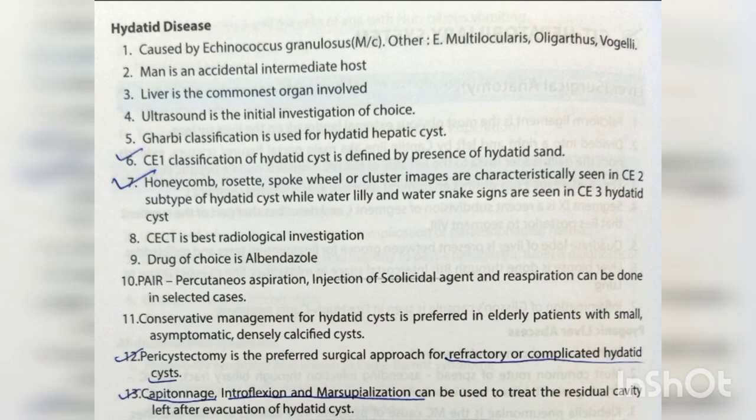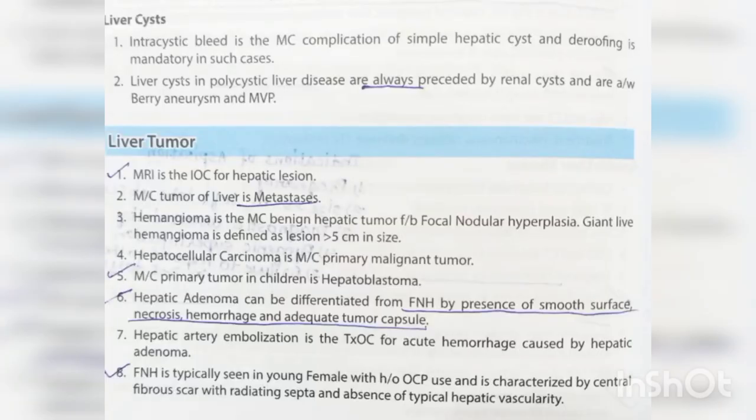Liver cysts: intracystic bleed is the most common complication of a simple hepatic cyst, and deroofing is mandatory in such cases. Liver cysts in polycystic liver disease are always preceded by renal cysts and are associated with Berry aneurysm and mitral valve prolapse.